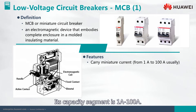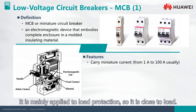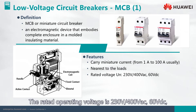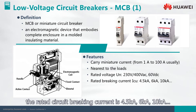Its capacity range is from 1 to 100 Ampere. It is mainly applied to load protection, so it is placed close to the load. The rated operating voltage is 230 V or 400 V for AC, and 60 V for DC. The rated circuit breaking current is 4.5 kA, 6 kA, or 10 kA.